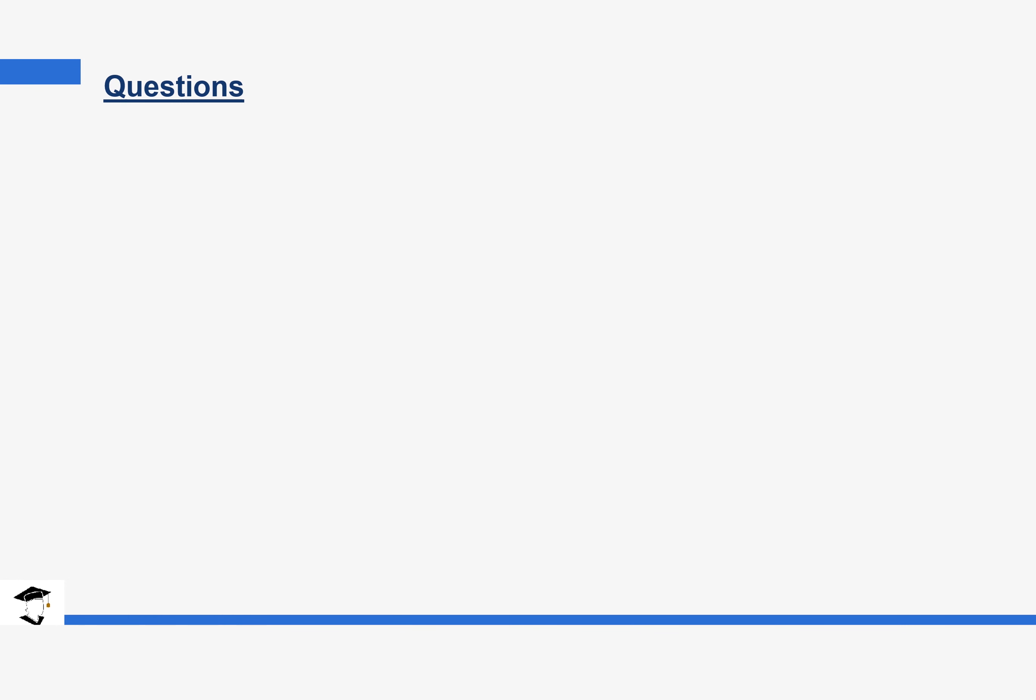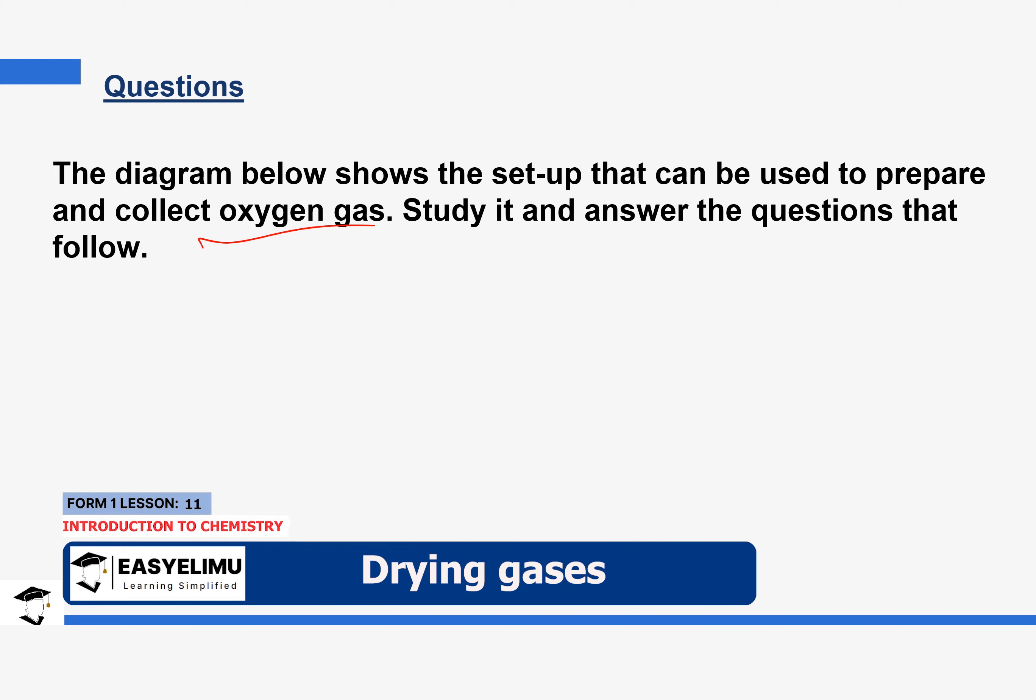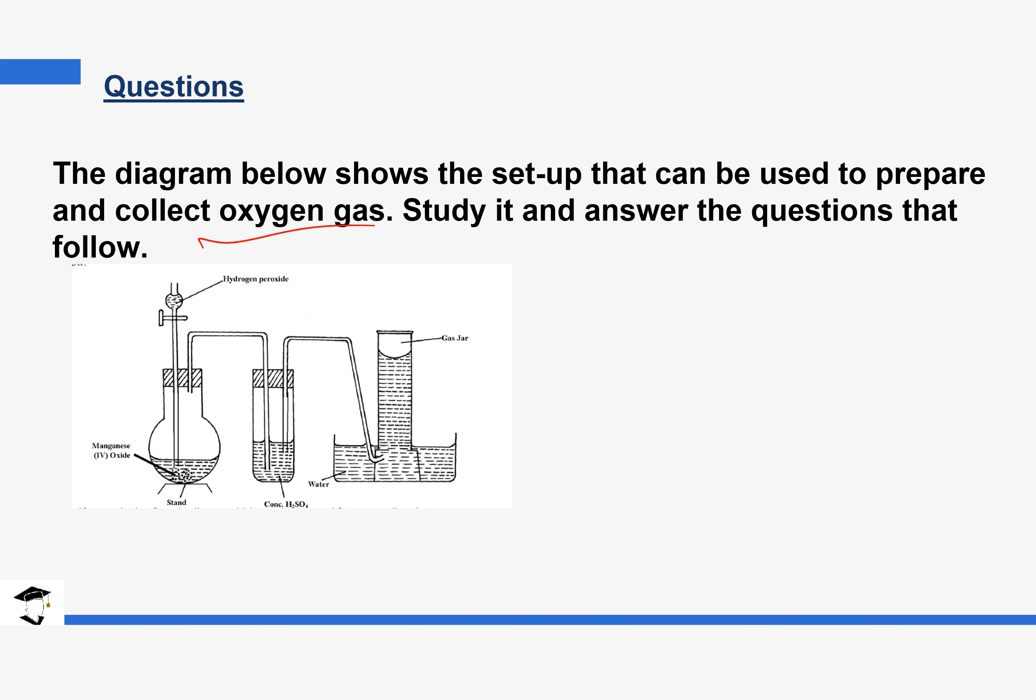Next we are going to look at a few questions in regards to what we have just discussed. So the diagram below shows the setup that we use to prepare and collect oxygen gas. We have mentioned oxygen gas as being one of the gases that is neutral in nature. Study it and answer the questions that follow. So hydrogen peroxide reacts with manganese oxide. So I know we have not yet looked at this process in detail, but the questions are in relation to what we are going to discuss. So hydrogen peroxide decomposes to form oxygen and you can see oxygen is being passed over concentrated sulfuric acid and it is collected by over water method.